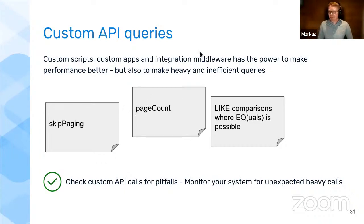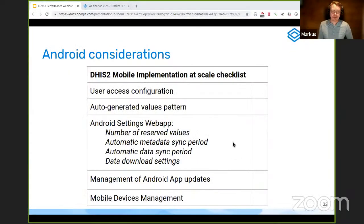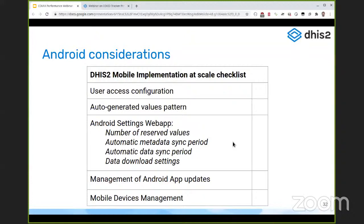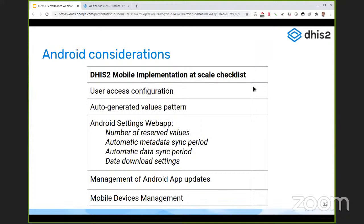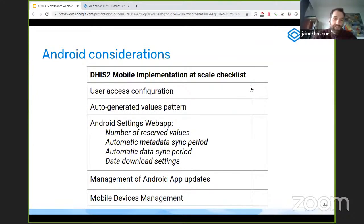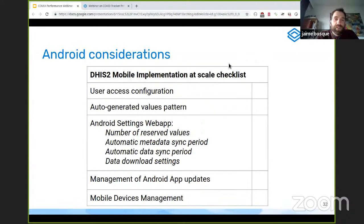That was my last slide; I'll hand it over to Jaime on the Android team. For those of you who don't know me, I'm Jaime, part of the Android team. We are aware that many implementations of COVAX are using Android devices. I'm going to cover some considerations that we believe you should be taking into account, because they might really improve the performance of your server. This is a checklist of the things I'm going to cover, and by the end of my slides, I'd like you to be able to check them all.